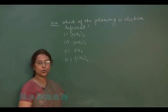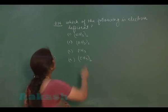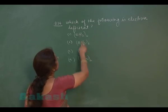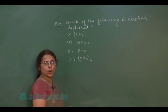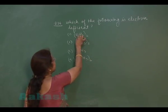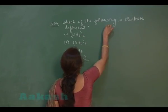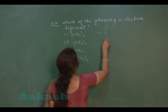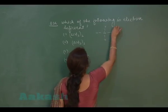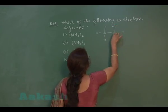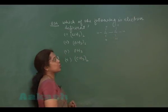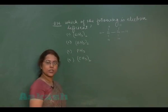Let us see the question number 34. Question is which of the following is electron deficient compound? The first option is SiH3 whole twice. Structure of compound Si2, silicon atoms bonded through covalent bond. So here the octet of silicon is complete.